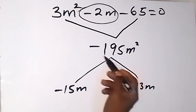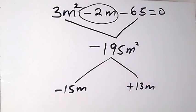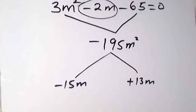So multiplication of these two numbers will give us -195m², and when we add them together we have -2m. The next step is to replace that -2m with these two numbers.